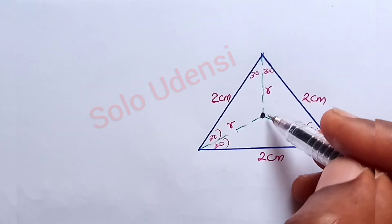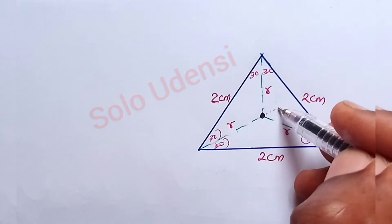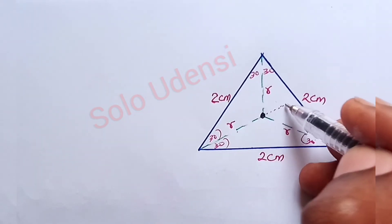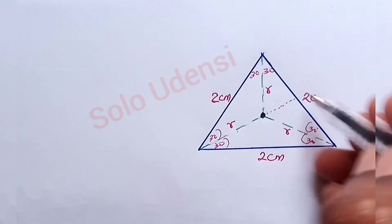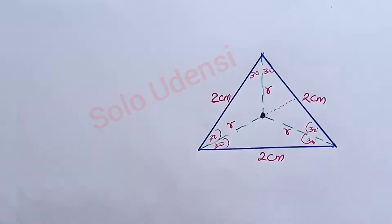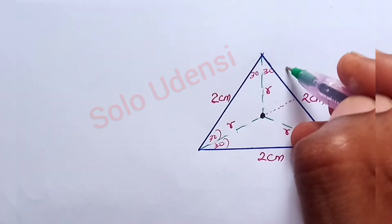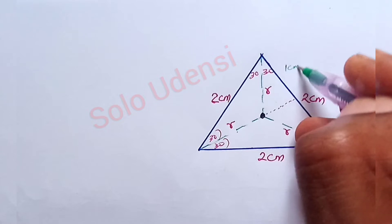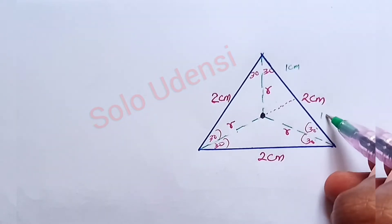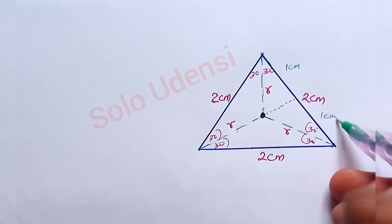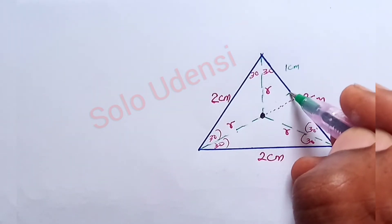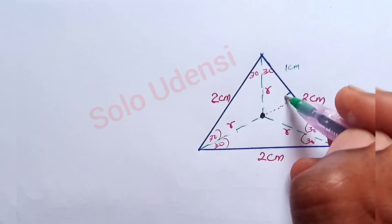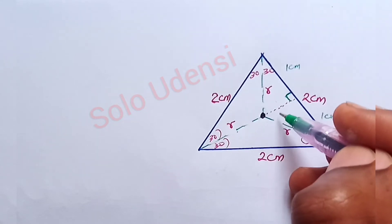If we extend the bisector further, it will bisect the opposite side into two equal parts. So here will be 1 cm and here will be 1 cm. And this angle at the base will be a right angle, 90 degrees.